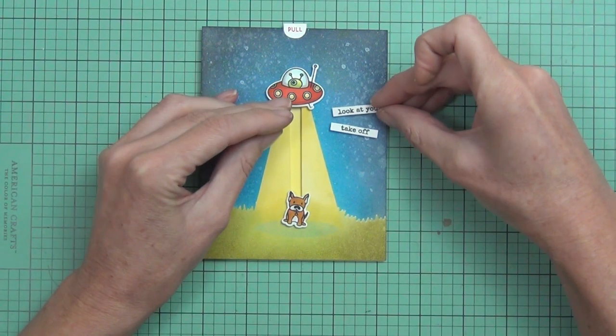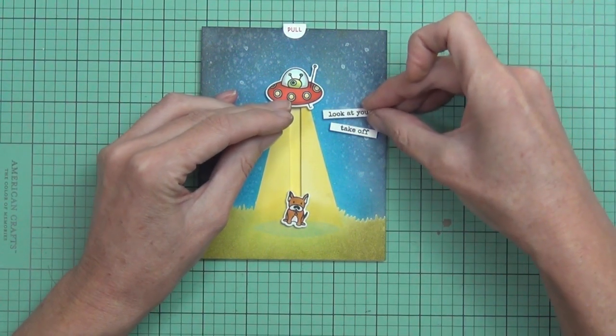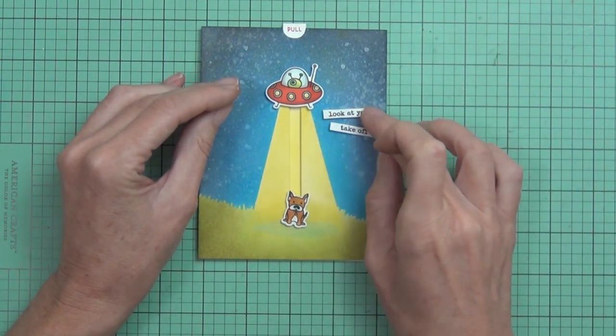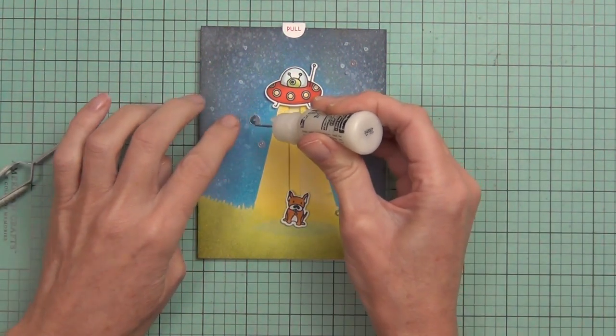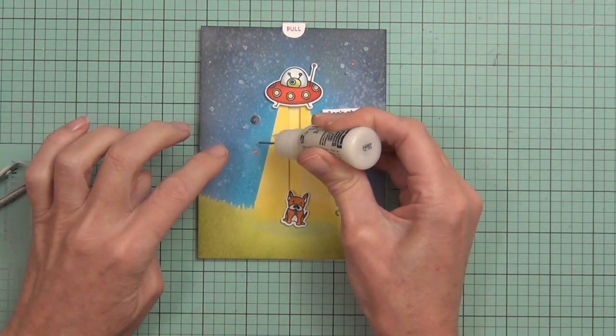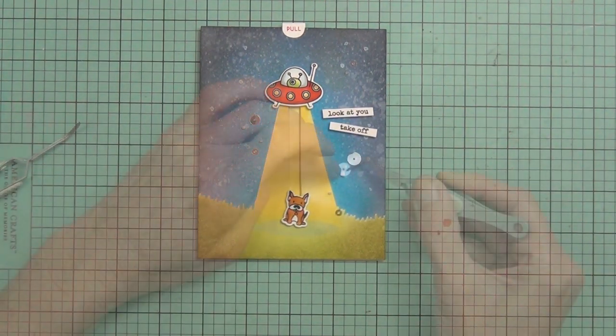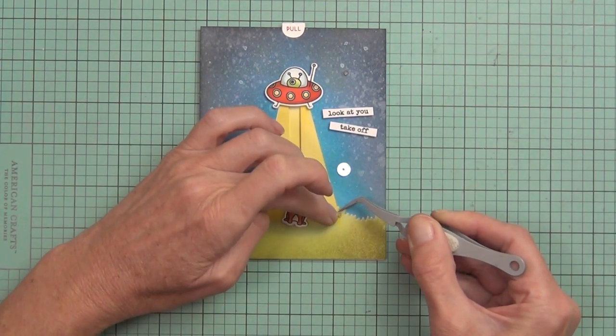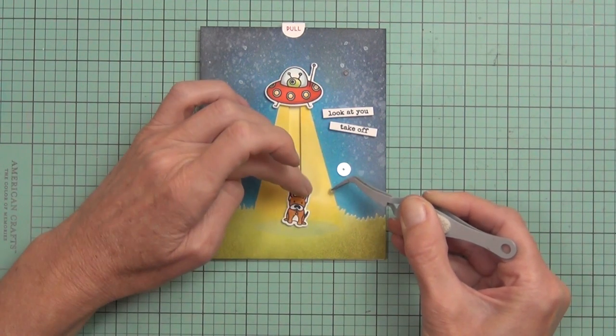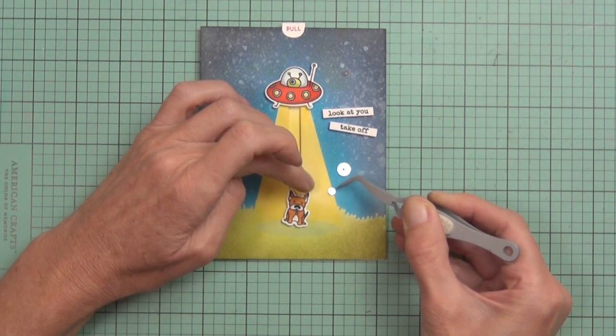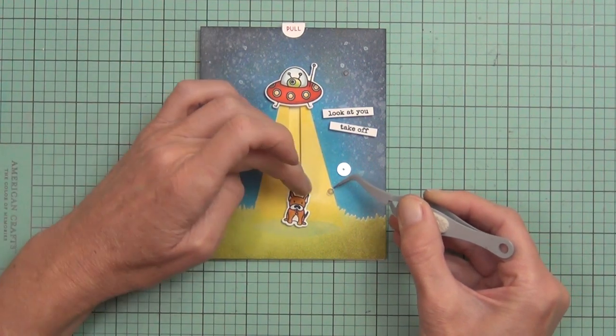I'm not sure if you can see it, but there was a little smudge in my beam of light, and I thought that these flat sequins from Altenew worked perfectly. So I added those around, scattered those around to sort of add some details and a little bit of extra fun.